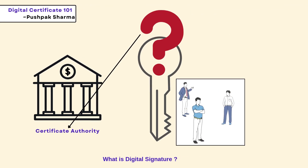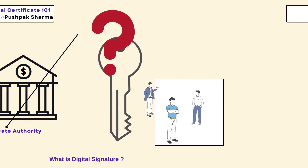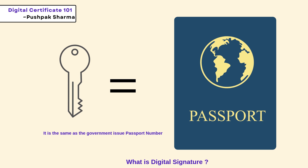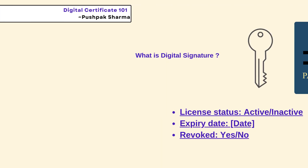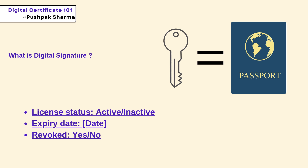In the digital world, certificate authorities handle public key distribution and authentication. Certificate authorities are like a government — just as you trust a government-issued document like a passport, you trust certificates they authorize. Digital certificates, like passports, have key details such as license status, expiration date, and other necessary information needed for authorization.